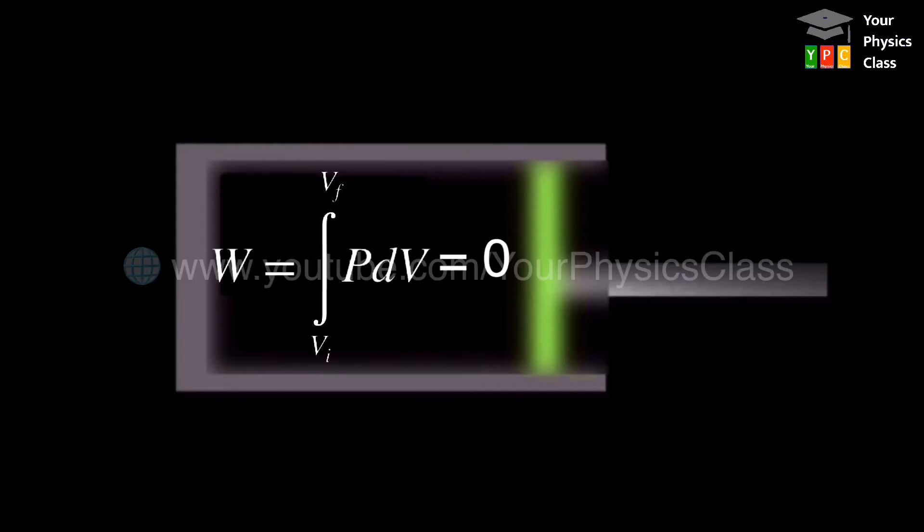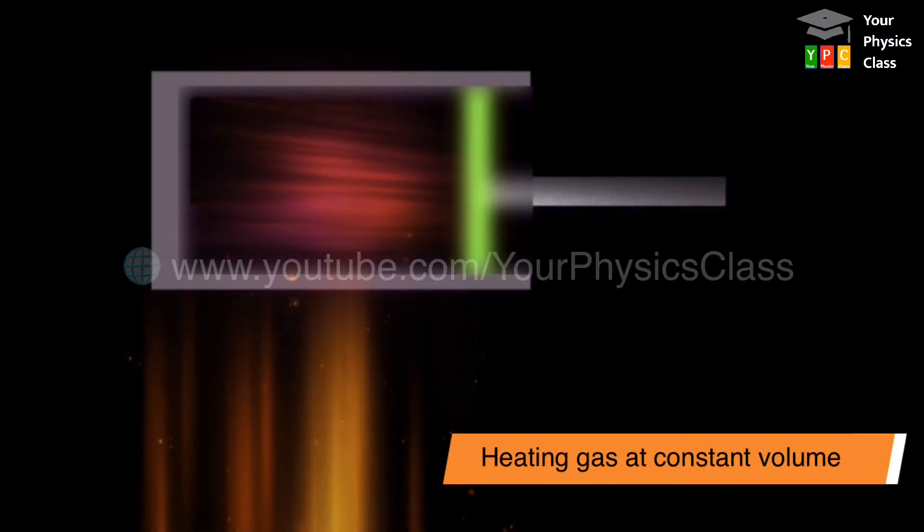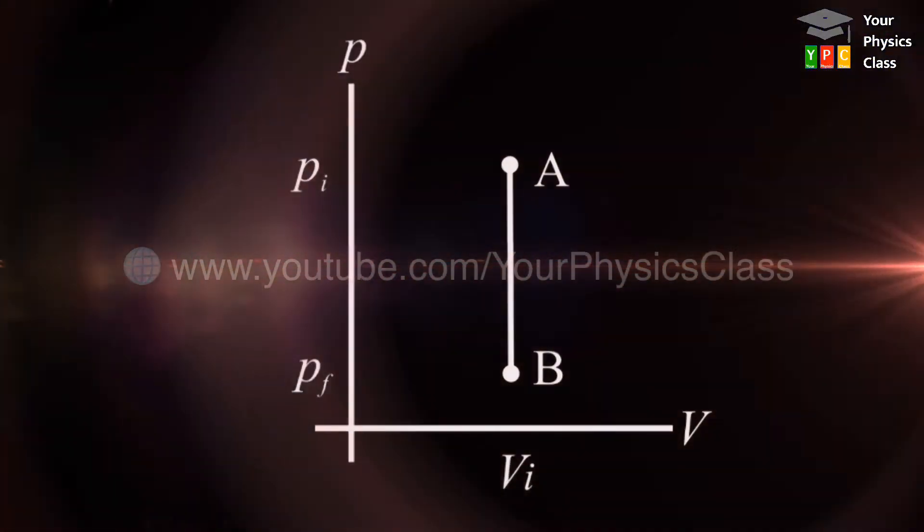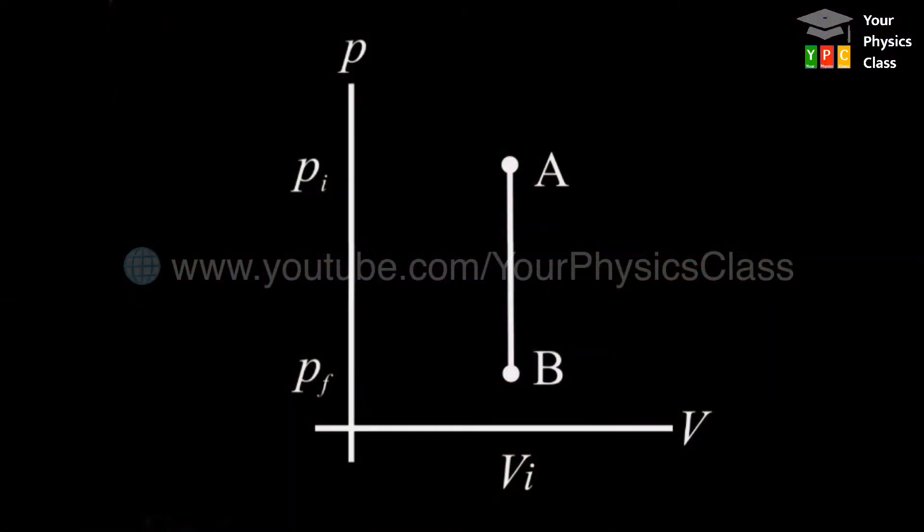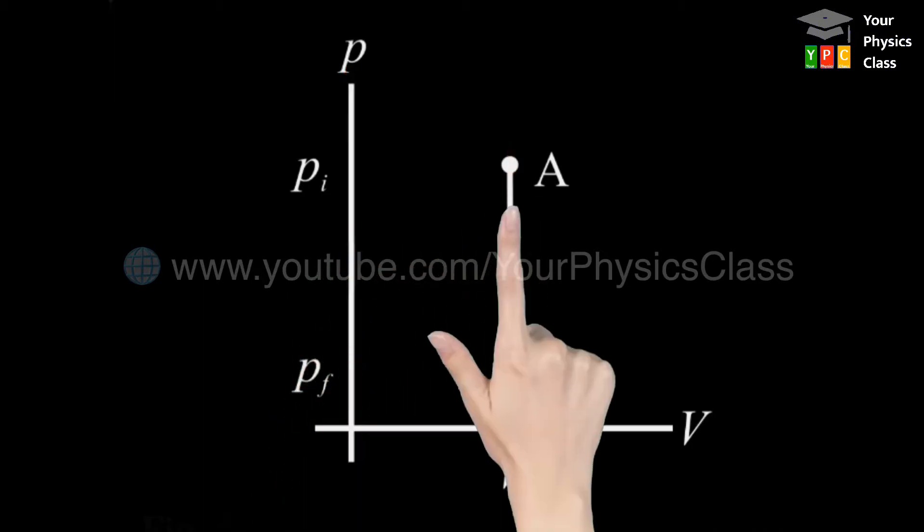Due to constant volume, change in volume would be zero. Therefore, work done in this process is zero. Heating a gas in a constant volume container or diffusion of a gas in a closed chamber are some examples of isochoric process. The PV diagram for isochoric process is shown on your screen. The path is parallel to pressure axis since volume is constant.